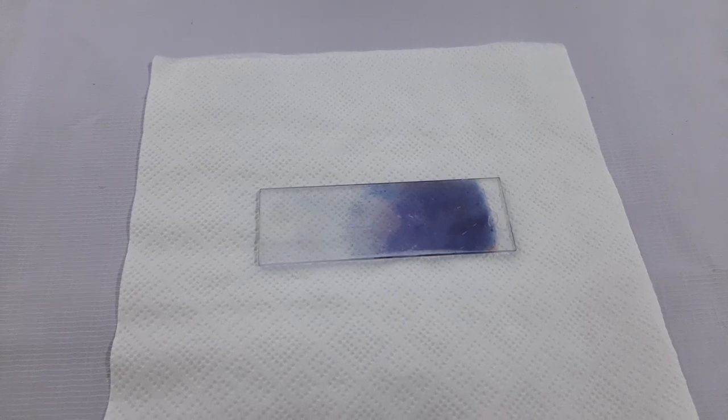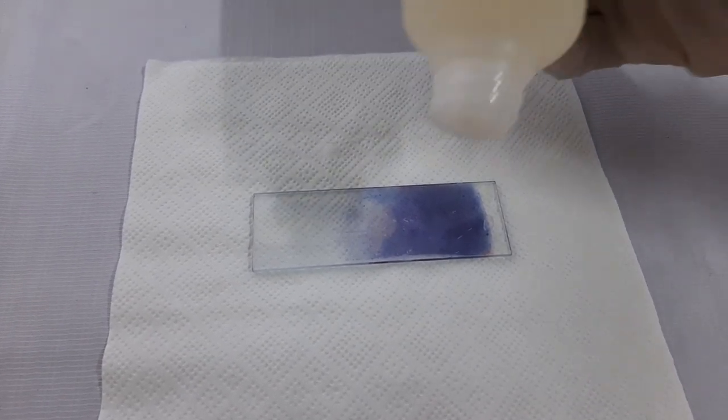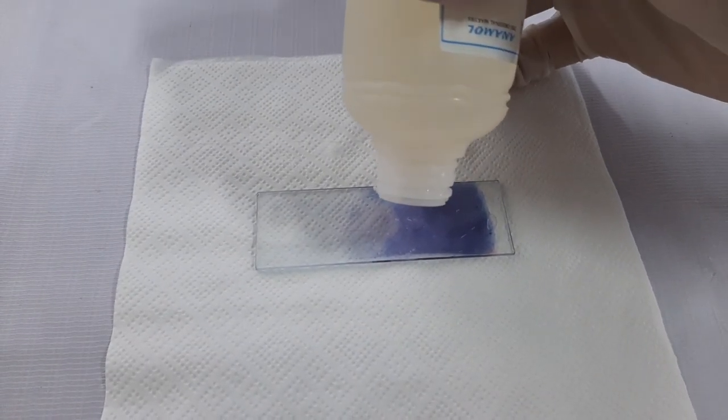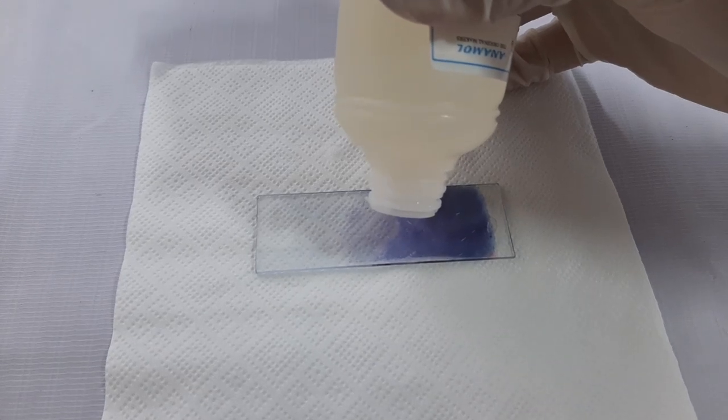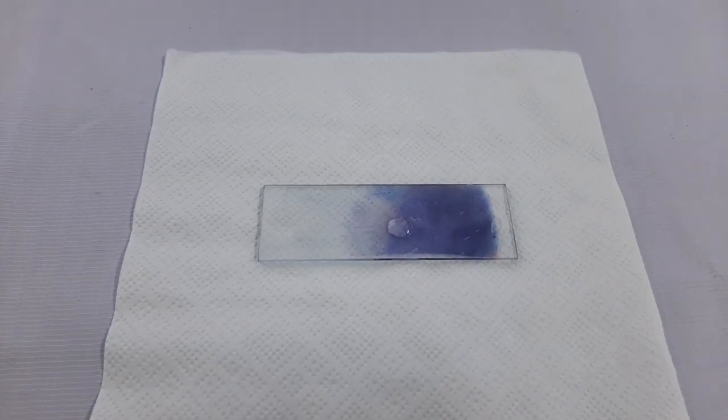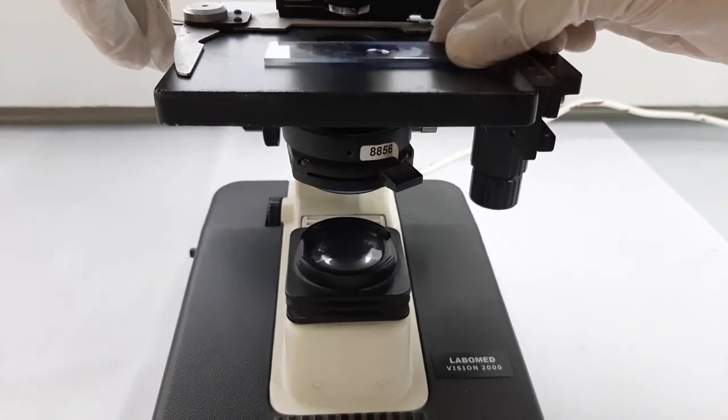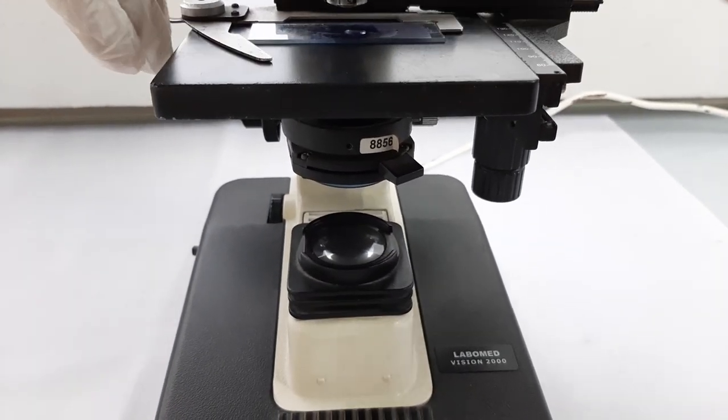Once the slide is air dried, place one drop of immersion oil on the thin side of the film. And place the slide under the oil immersion lens of the microscope and observe for further examinations.